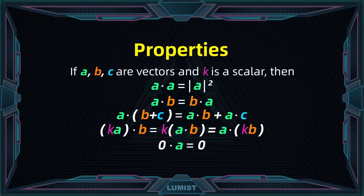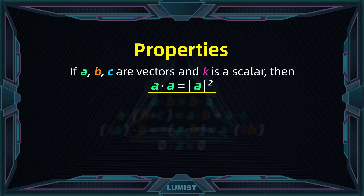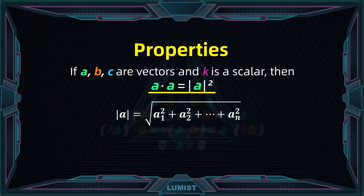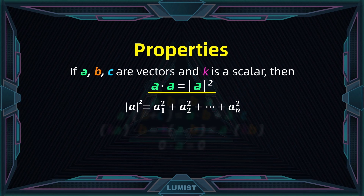Now for the properties of the dot product. The first important property is that vector a dotted with itself gives you the square of its norm. Recall that the norm of a is the square root of the sum of squares of each entry — a1, a2, through an. If we square the norm, that removes the square root, and we see it equals each entry multiplied by itself and summed — exactly the same as a dot a. So a dot a equals the norm of a squared. Don't forget the square: a dot a is not the norm of a, but the square of the norm.